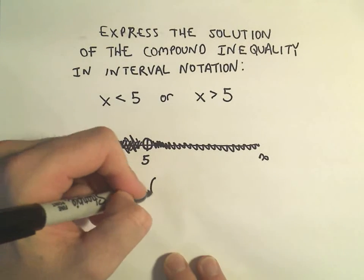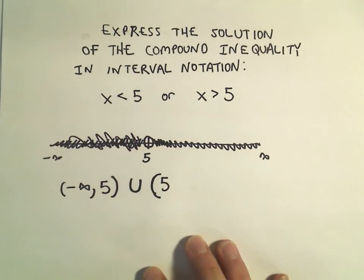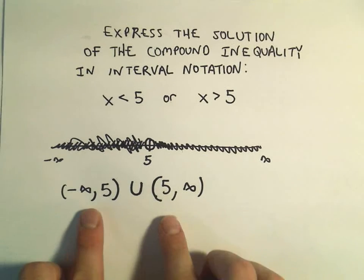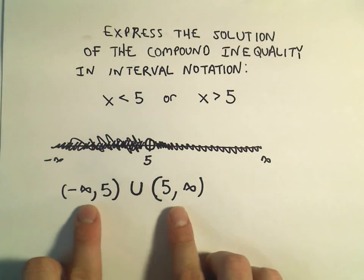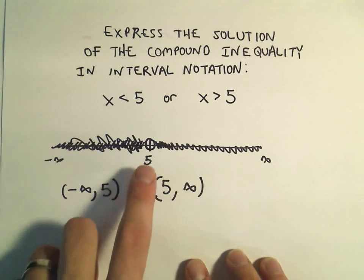Or we can skip over 5, so again, I'm going to put parentheses to indicate that we don't use it, all the way up to infinity. So when we write this interval notation, it's really just a fancy way of saying every single number works except for the number 5.